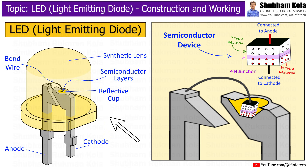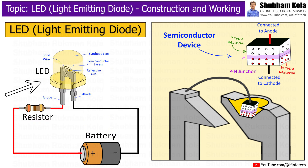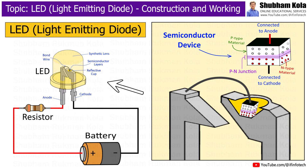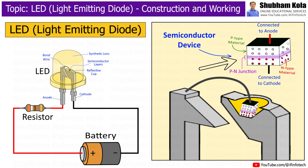In this video, we are going to learn about the construction and working of LED, i.e. Light Emitting Diode. It is a type of semiconductor device that emits light when current flows through it. In this session, we will explore how an LED is built and how it works to produce light.